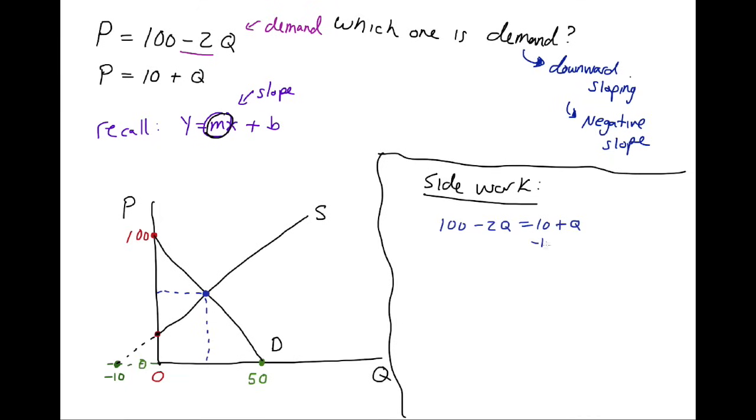Let's go ahead and take away 10 from both sides. And let's add 2Q to both sides. And what we're going to get is we're going to get 90 equals 3Q. If we divide both sides by 3, you can see that Q is going to equal 30.